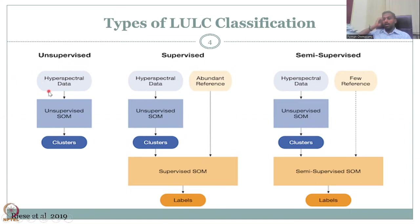So let's look at a schematic of the land use land cover types. So types of LULC classification, we have unsupervised, supervised and semi-supervised. In hyperspectral data, which is multiple spectral, a very fine wavelengths. So for example, a green will be divided into 200 greens. That is hyperspectral. And you have unsupervised and then you run the unsupervised tool, it comes clusters. So that is one classification.